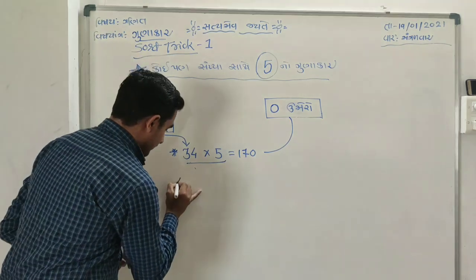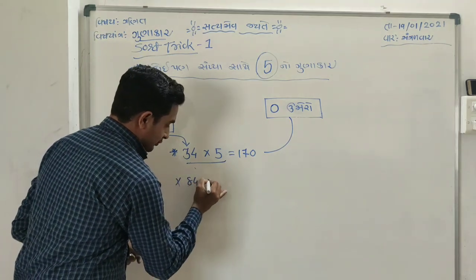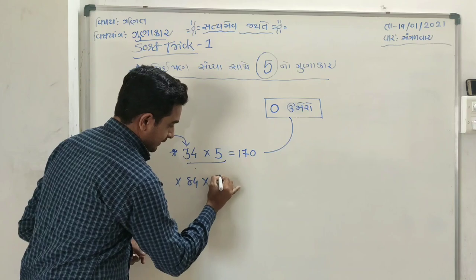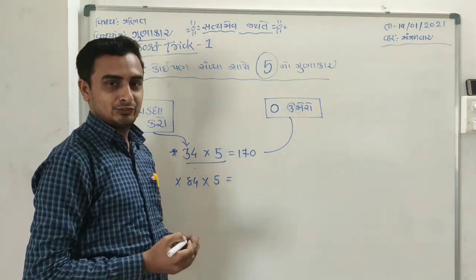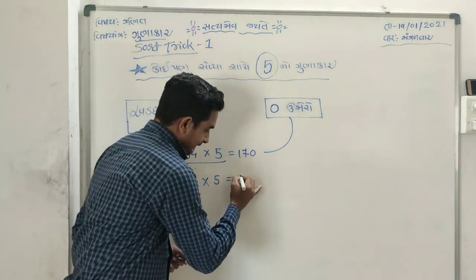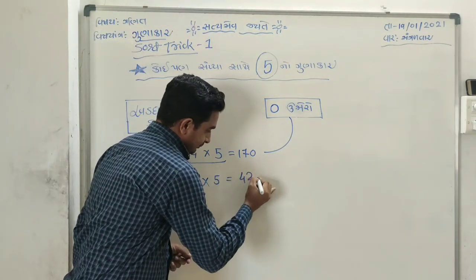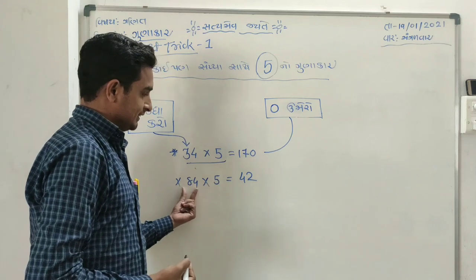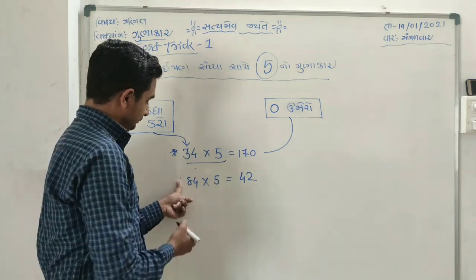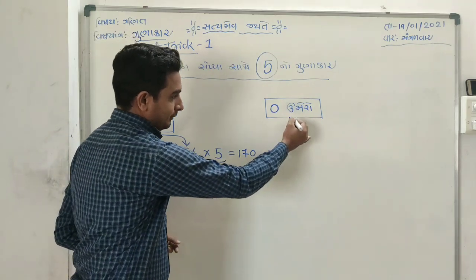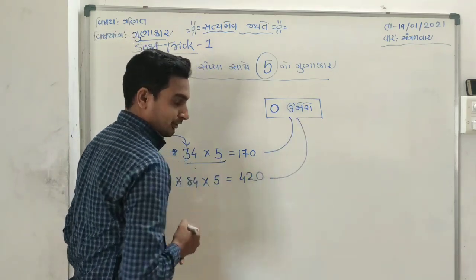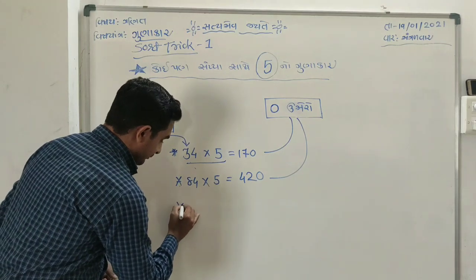Let me show you the figure and demonstrate the calculation method. First, you need to understand how to multiply by 5. When you work through the steps, you'll see the pattern.